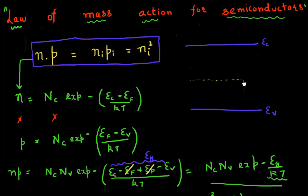Let's say I have an intrinsic semiconductor. In an intrinsic semiconductor, my Fermi energy lies somewhere close to mid-gap, or I have equal number of n and p. In that case, this is just equal to n_i squared.